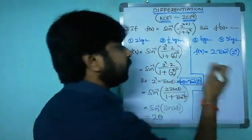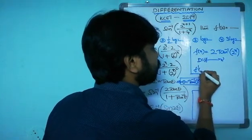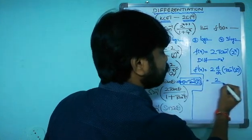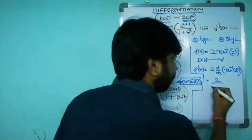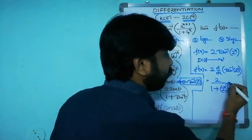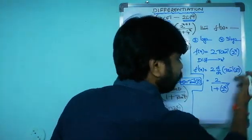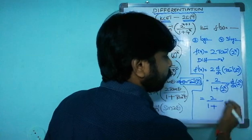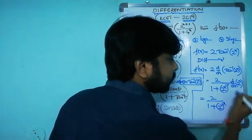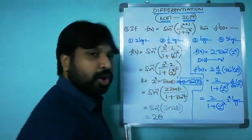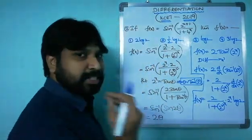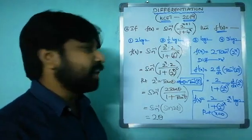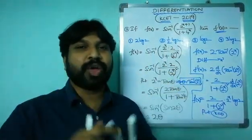Now differentiate: f'(x) = 2 · d/dx[tan⁻¹(2^x)]. The derivative of tan⁻¹(u) is 1/(1+u²), so this gives 2/(1 + (2^x)²) times the chain rule derivative of 2^x, which is 2^x · ln 2. So f'(x) = 2·2^x·ln 2 / (1 + (2^x)²). Now substitute x = 0 to find f'(0) and check which option matches.